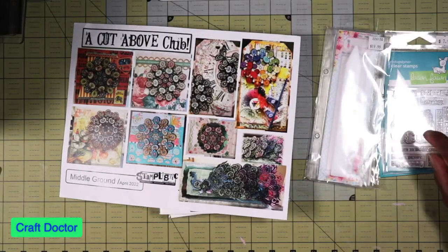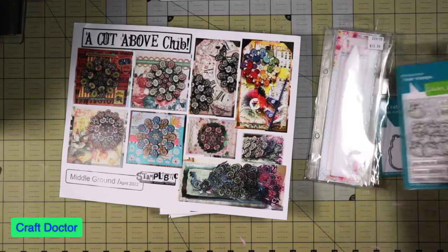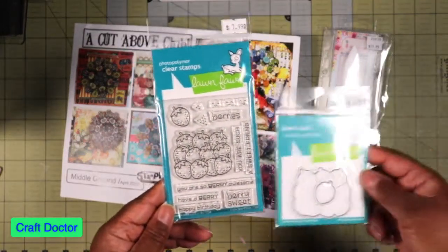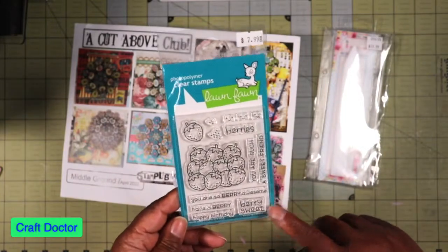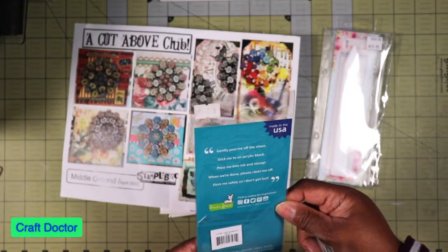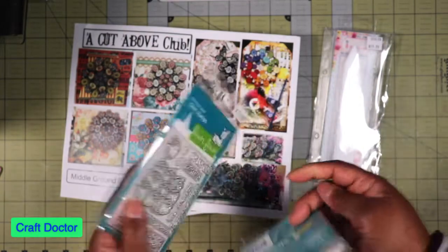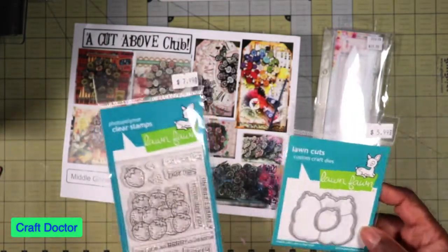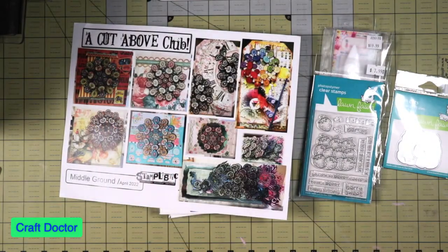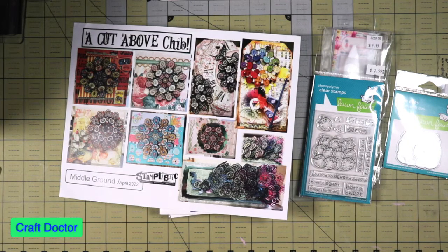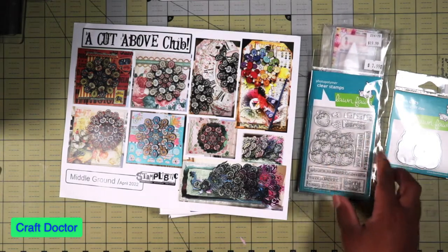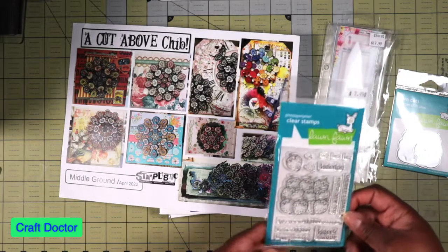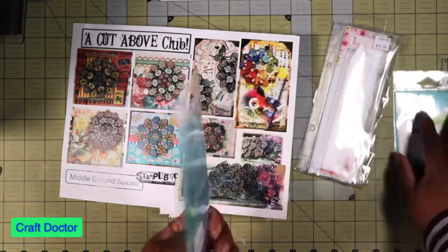This is one of the sets from the haul - from Lawn Fawn, the die set. I want to say it's called the jar, but I think that's the wrong name. This is the strawberry add-on and I wanted to pick this up. It's from the How You Bean stamp set with the jar that has beans and cherries. This is one of the newer sets.